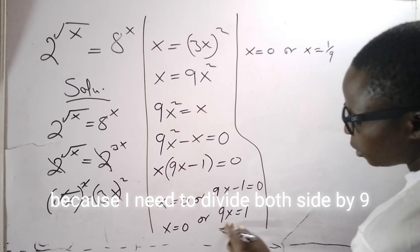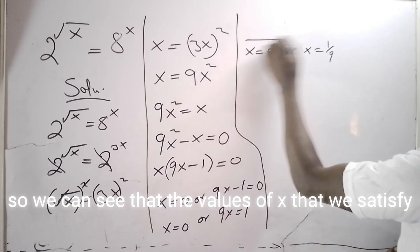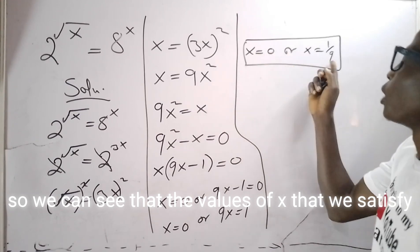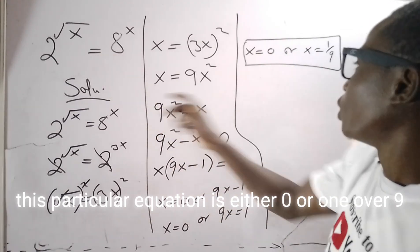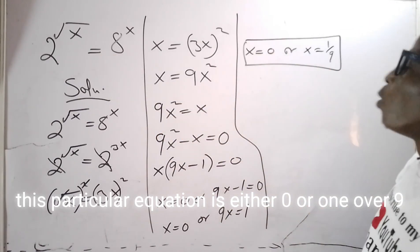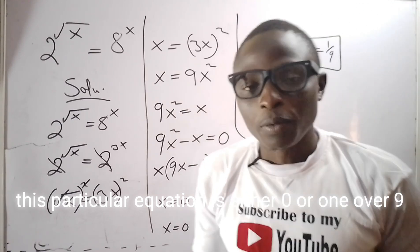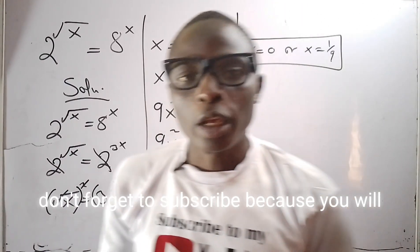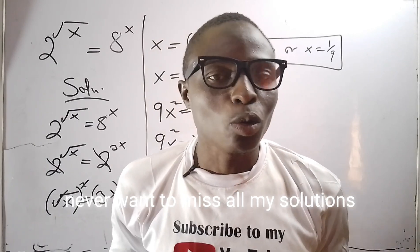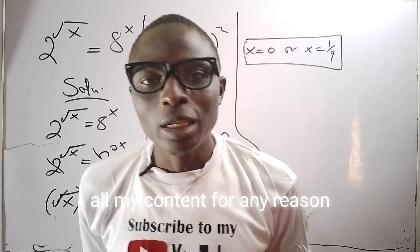So we can see that the values of x that will satisfy this particular equation is either zero or one over nine. Thank you so much for watching, don't forget to subscribe because you will never want to miss all my solutions, all my content for any reason.